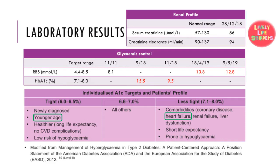His renal profile was normal. His random blood sugar levels were within range in the year 2011 but on the high side in 2019. His HbA1c readings on September and November 2018 were 15.5% and 9.5% respectively, both higher than his target range of 7.1% to 8.0%. We aimed for a less tight target for this patient because he had heart failure, even though he was quite young in his 30s.